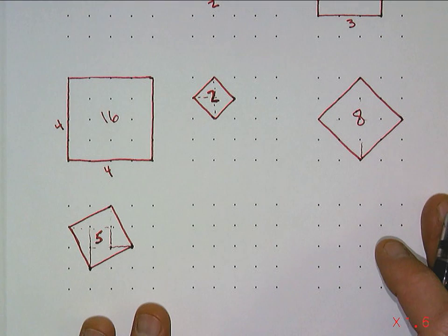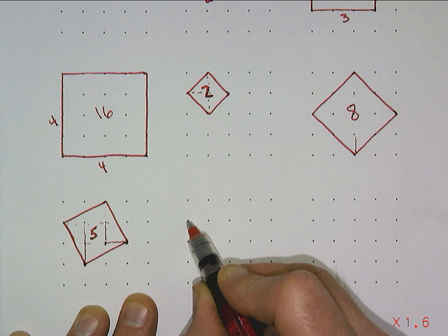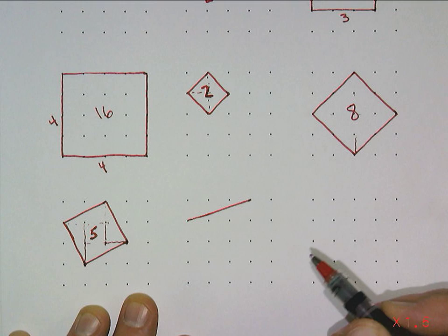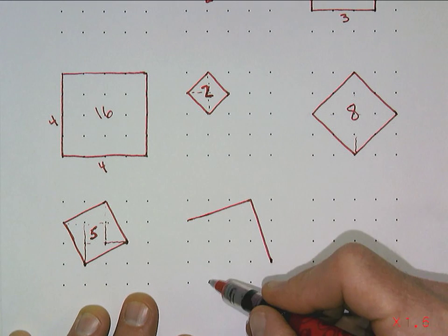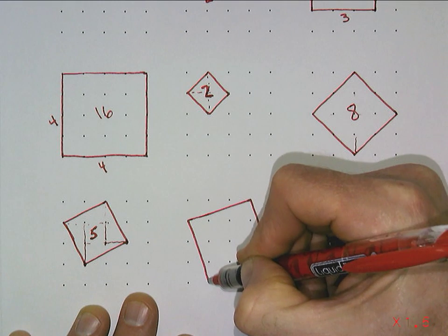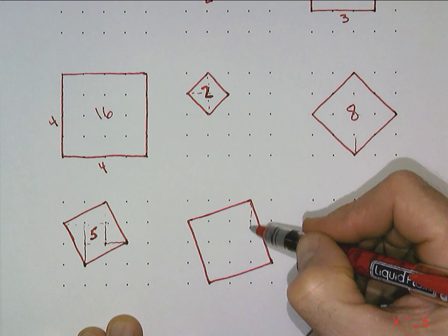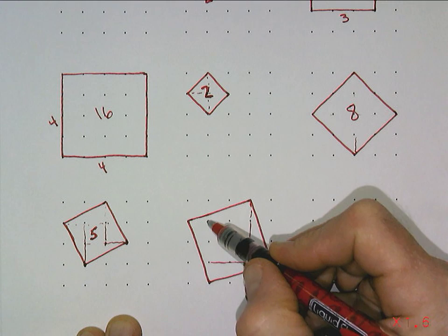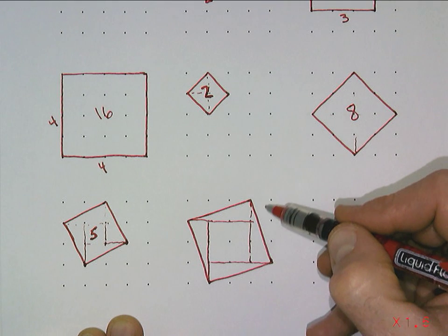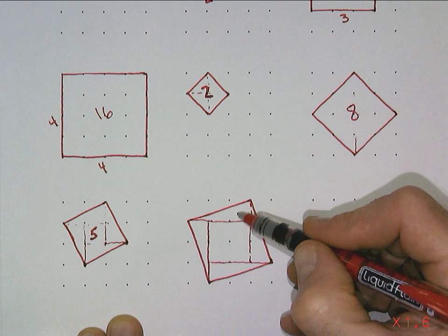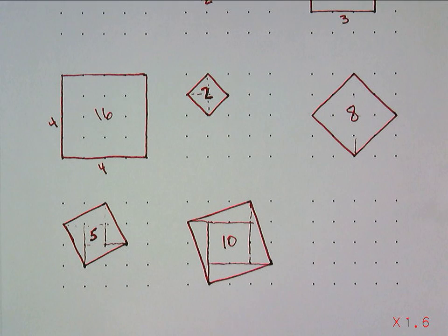There's actually one more tilted square we can fit. On the previous one I went up one and over two; now if I go up one and over three, I can get one more square that fits on the five by five dot grid. Finding the area: cutting it into triangles, each triangle on the outside edge is half of three, so half of that is one and a half, four times. The four squares in the middle plus those triangles make a total of ten square units — so the area of that square is ten square units.